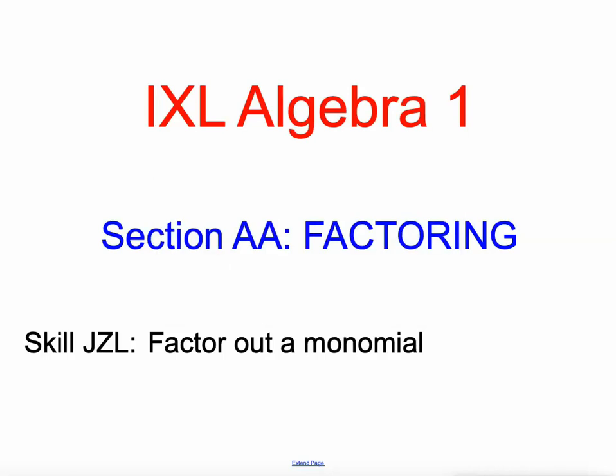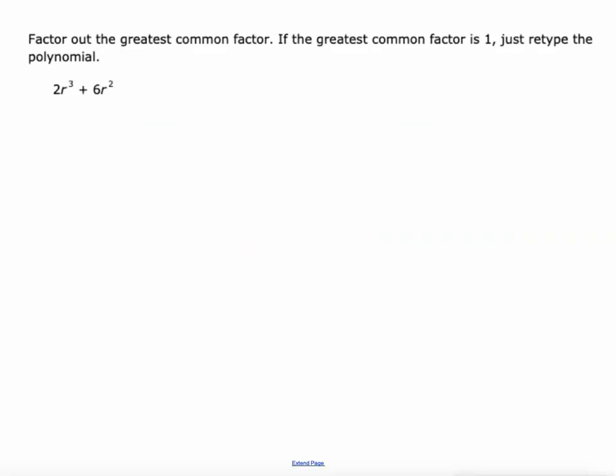Hey everyone, Mr. Kaczynski here working through IXL's Algebra 1 skills. Section AA is factoring. In the first lesson of this section we identified a greatest common factor of terms. Today we're going to take that greatest common factor and factor it out of an expression.